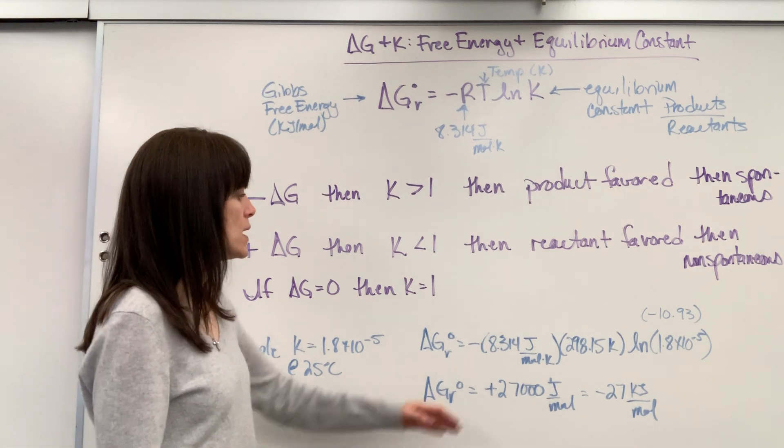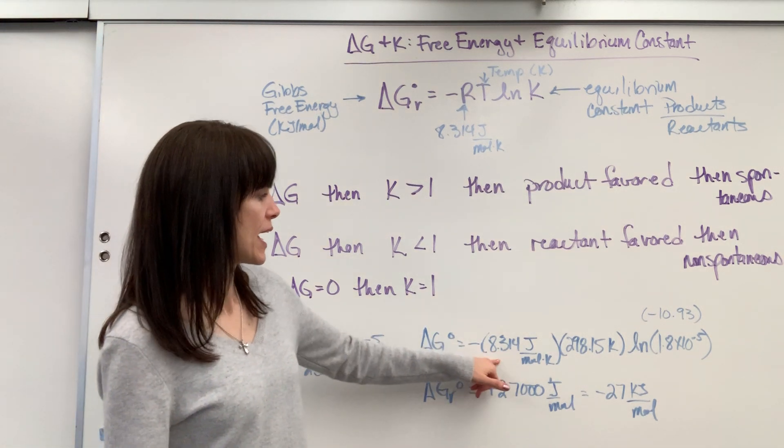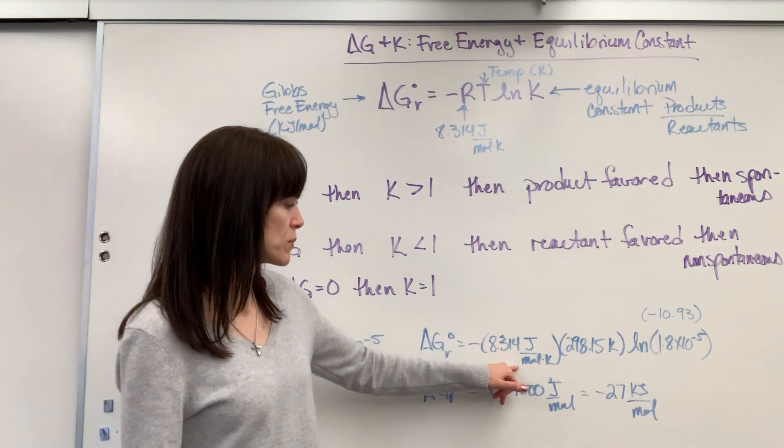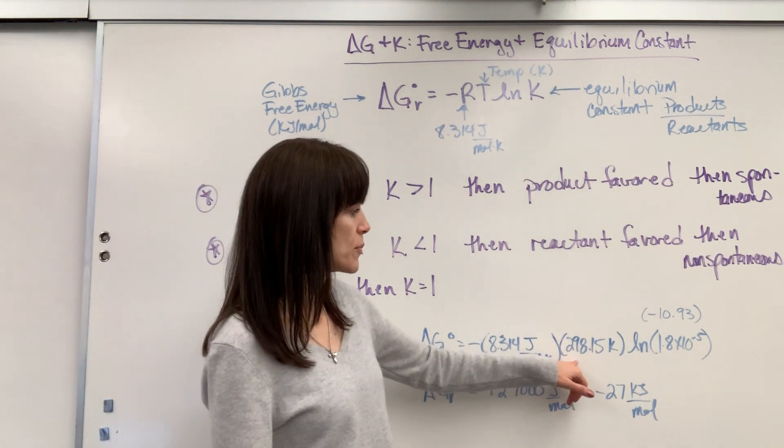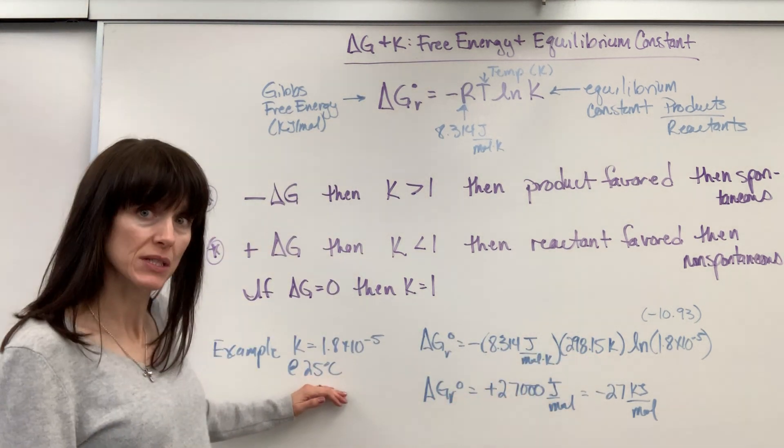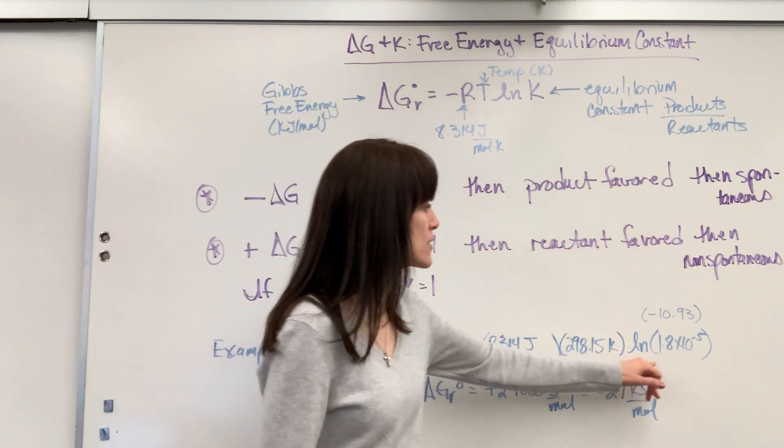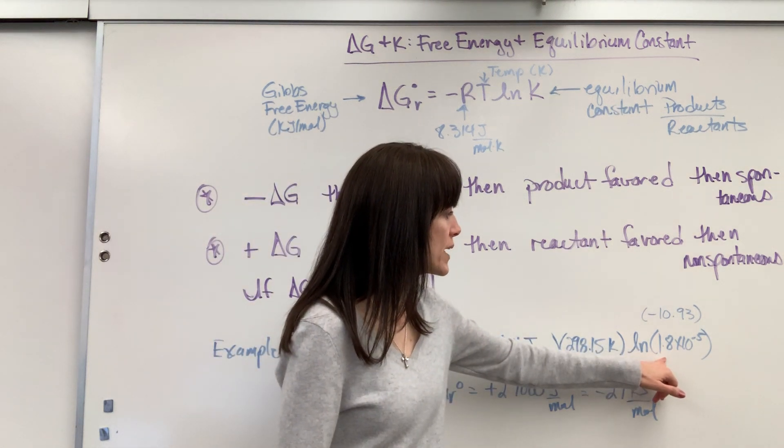Let's go ahead and plug everything in. So I've got my negative 8.314 joules per mole times Kelvin times 298.15 K, because it was 25 degrees C put it in Kelvin, times the natural log of 1.8 times 10 to the minus 5.